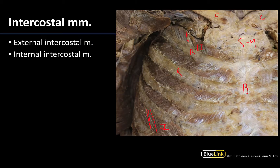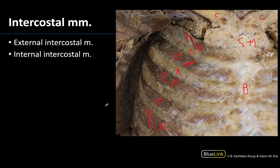The internal intercostal — which you can see in these three spaces that have been dissected a little bit deeper, so the external intercostals have been removed — these are going to be perpendicular to the external intercostal fibers. So whereas the externals run this way, the internal intercostals are going in this direction, as you can see here — perpendicular to those external intercostals.